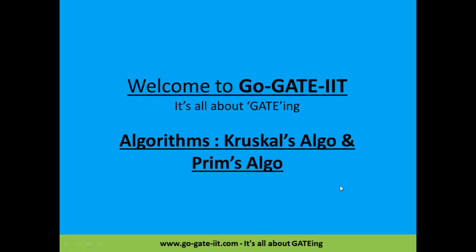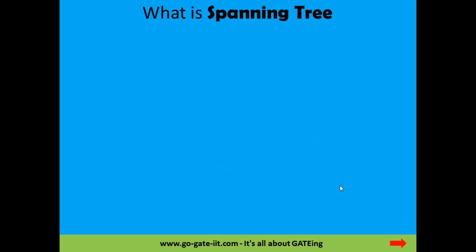Welcome to GoGetIt. Today we are going to see some of the important algorithms that follow a greedy approach: Kruskal's algorithm and Prim's algorithm. But before we dig into the details of these algorithms, we should build the foundation of these algorithms, i.e. spanning tree.